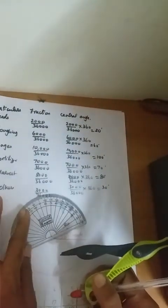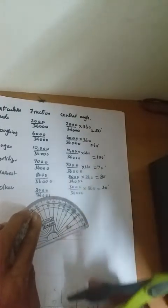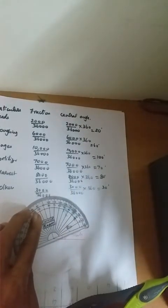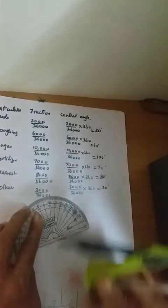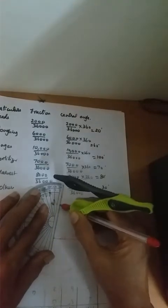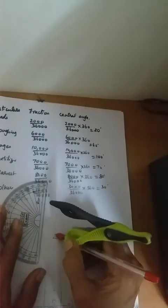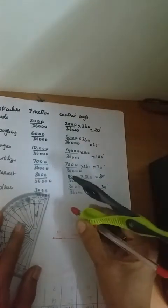The next angle is 60 degrees. Keep your protractor in position and mark 60 degrees. This gives you the 60 degree sector and the heading is 'Plowing'.